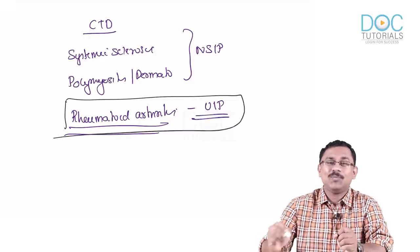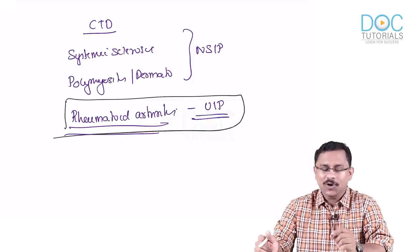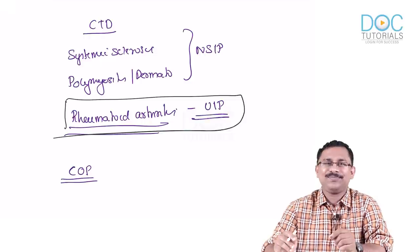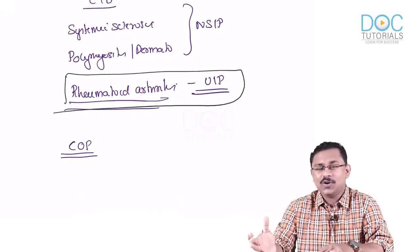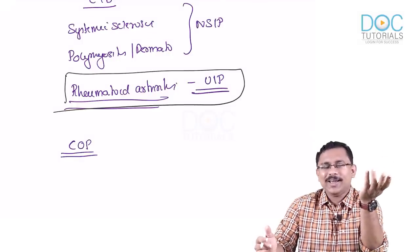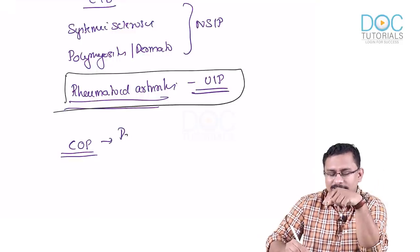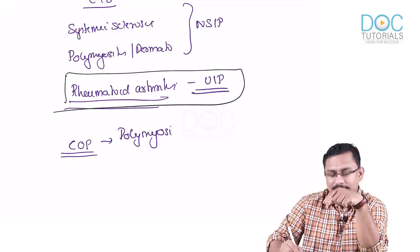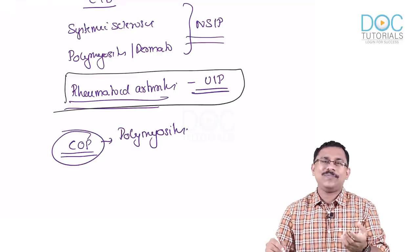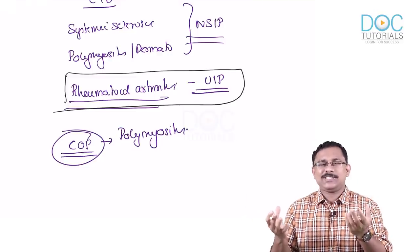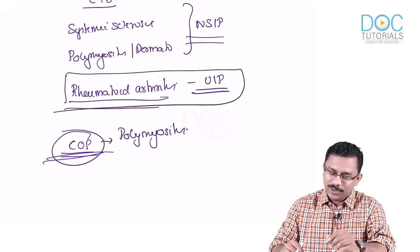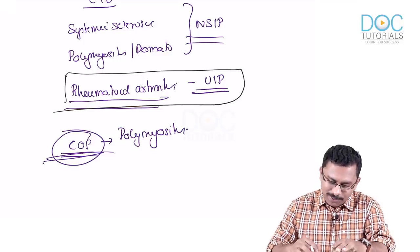Another MCQ: COP — cryptogenic organizing pneumonia — though grouped under unknown causes, can also occur secondary to polymyositis. So in polymyositis, both NSIP pattern and COP can occur. In polymyositis, cryptogenic organizing pneumonia is also a recognized common pattern — important to remember.